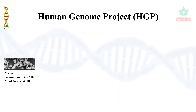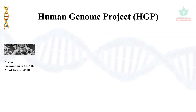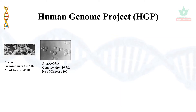For the human genome project, we can analyze the number of genes across organisms. E. coli has a genome size of 4.5 MB. Saccharomyces cerevisiae, a yeast cell, has a genome size of 16 MB with 6,200 genes.